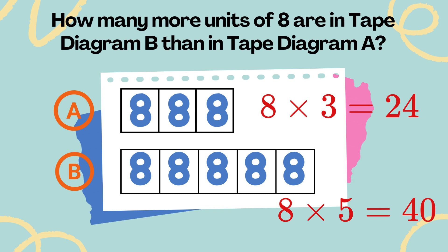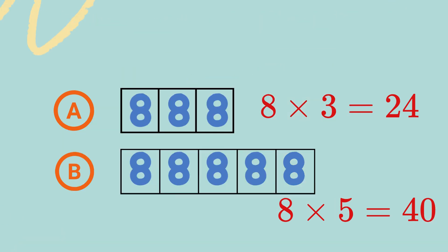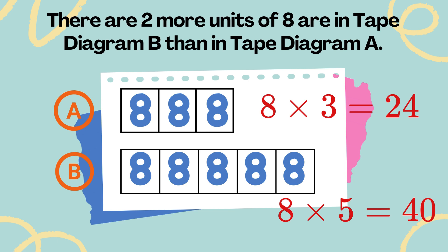How many more units of 8 are in tape diagram B than in tape diagram A? In tape diagram A, I see 3 units of 8. In tape diagram B, I see 5 units of 8. There are two more units of 8 in tape diagram B than in tape diagram A.